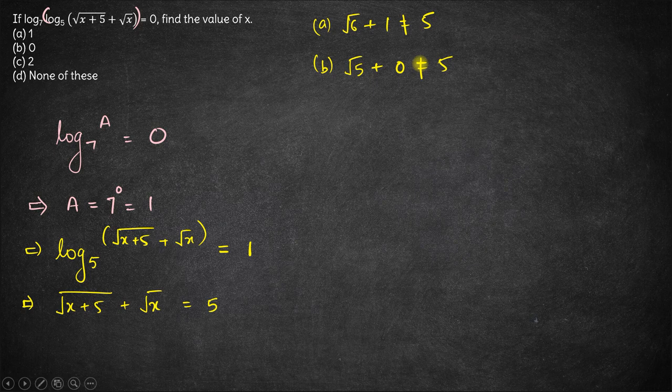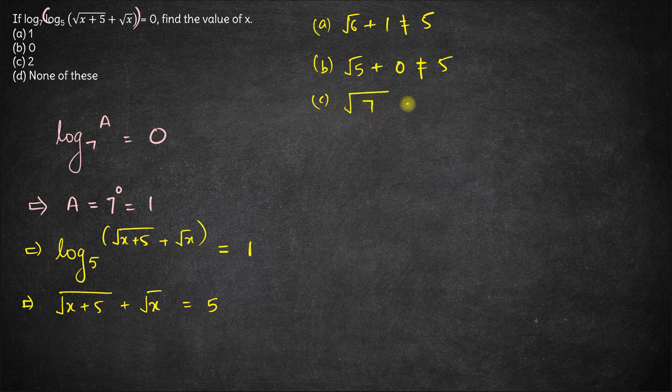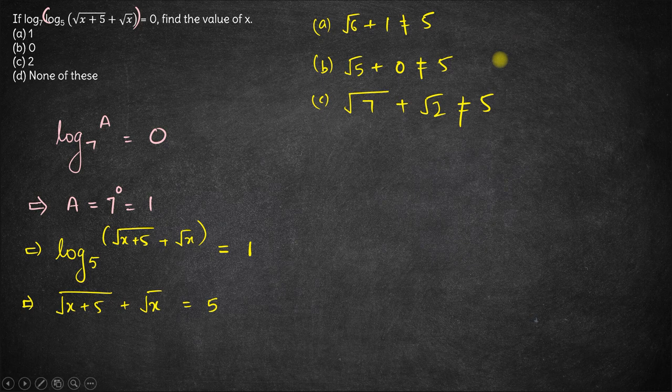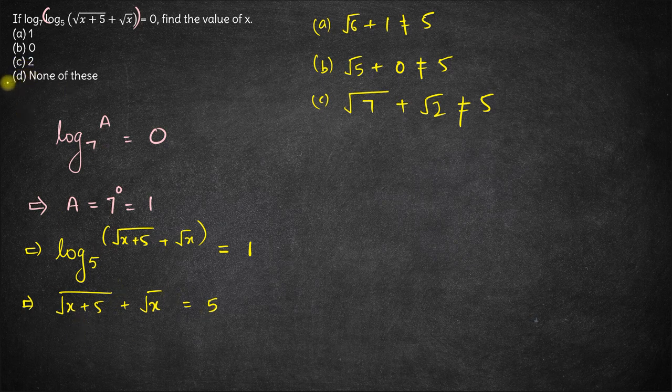Next let's check for option c which is 2. So we have root of 2 plus 5 is root 7 plus root of 2. Now is it equal to 5? Obviously not. These are two irrational numbers and this is a rational number. So not equal to 5. So option a, b, c none of them satisfies this equation. This particular expression. Hence option d is the right answer.